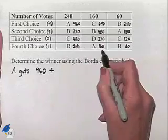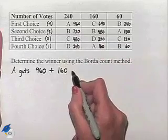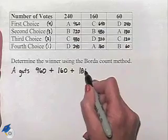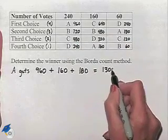Plus, next column, 160, and last column, 180. That totals 1,300 points.